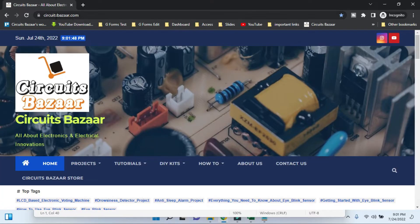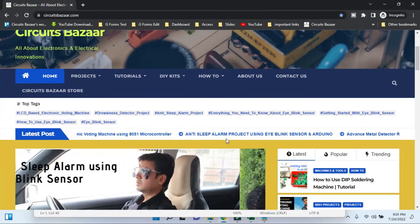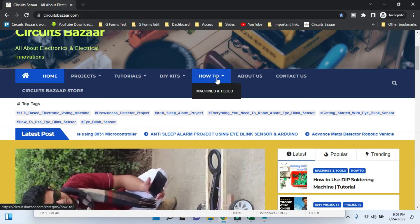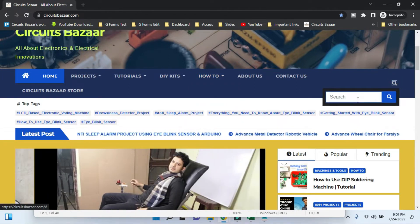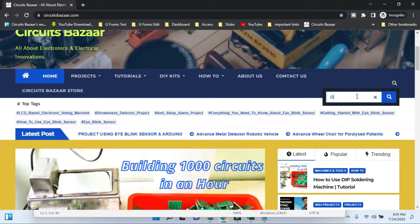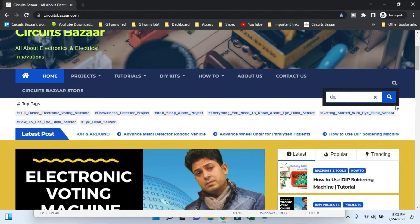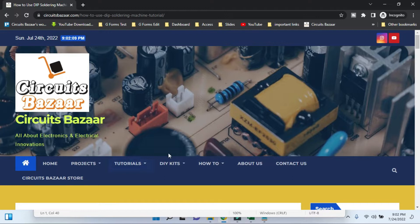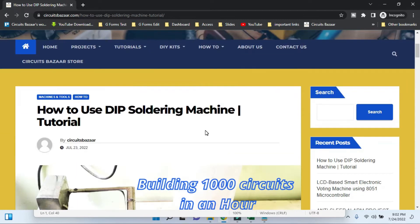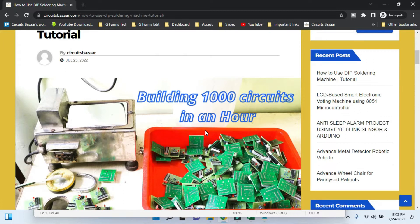This is our website circuitsbazar.com. To find the post, go to the How To section, then Machine and Tools, or search directly. This is the post 'How to Use Dip Soldering Machine.' The direct link is also in the video description.